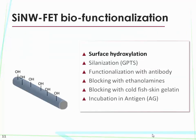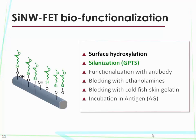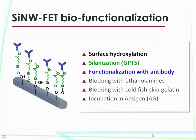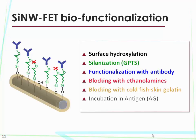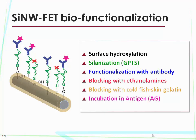The biofunctionalization process was performed at the University of Lausanne and consists of many steps of surface modification with the aim of improving the specificity of the sensor. We need to hydroxylize the surface in order to have OH groups that allow silane attachment on top of our nanowires. Silane chemistry is then used to cross-link the antibodies to the surface. We then need to block the first time with ethanolamine in order to block unreactive sites. We also added a further blocking step using reduced gelatin from cold fish skin, which we demonstrated increases specificity. Finally, we incubated the antigen for one hour to allow antigen diffusion to the antibodies.